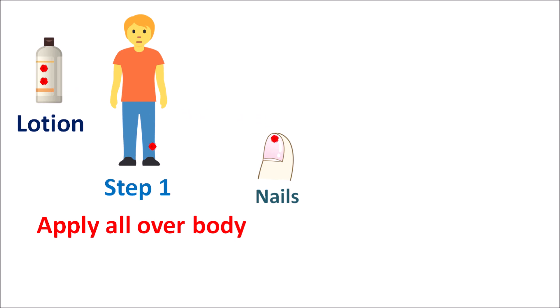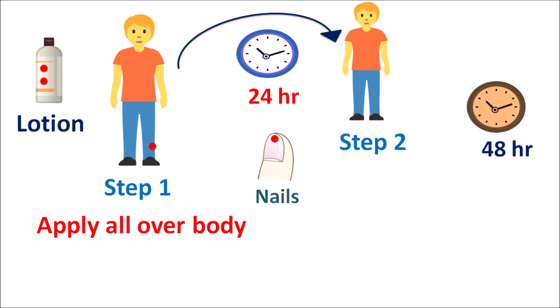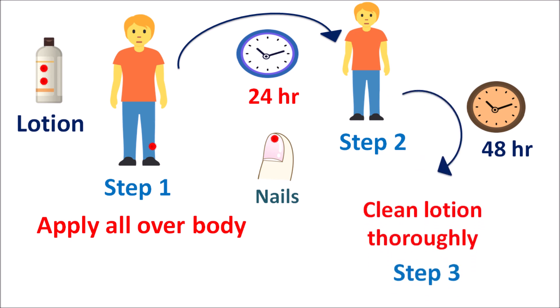The lotion should be applied on the nail tips in order to produce scabicidal action. The lotion can be applied again after 24 hours based on effectiveness, so a second application can be done in step 2, again on the entire body except the eye and mouth. The lotion should be thoroughly applied on the skin folds for effective treatment of scabies. After 48 hours, the lotion should be thoroughly cleaned off the skin to prevent any dryness and irritation. In this way, the lotion or cream is applied in two doses with a gap of 24 hours, and after 48 hours of the last application it should be removed.